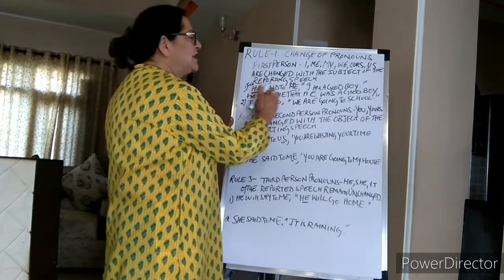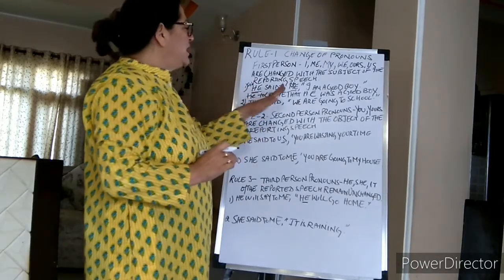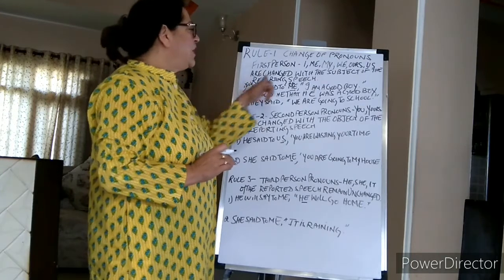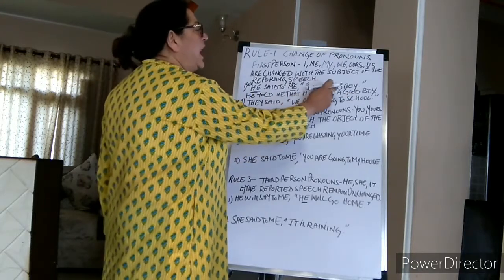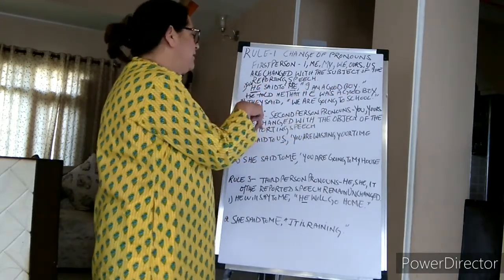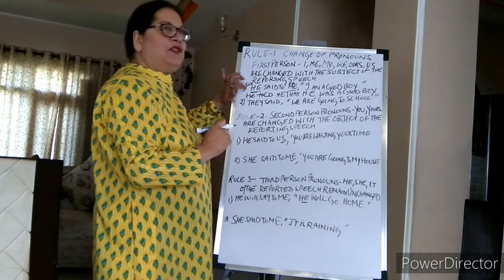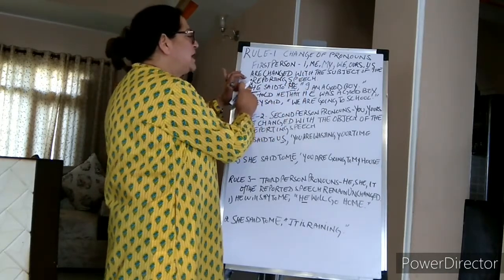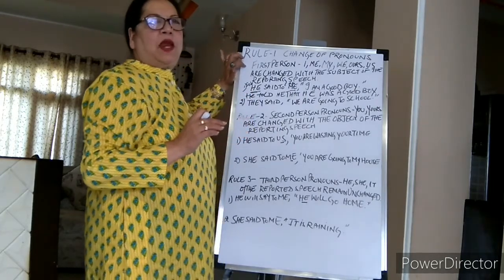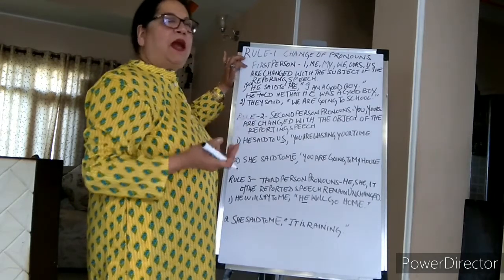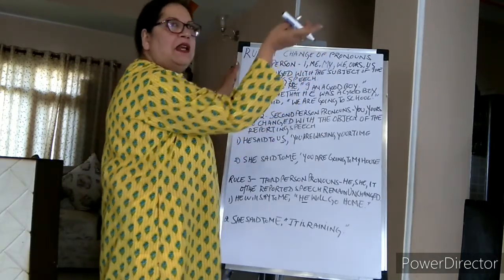For example: he said to me, 'I am a good boy.' Here he is the subject and me is the object. The first person pronoun 'I' changes to the subject 'he.' Because 'said' is past tense, 'am' changes to 'was.' So the sentence becomes: he told me that he was a good boy. The answer always lies in the sentence itself — just look at the subject of the reporting speech.